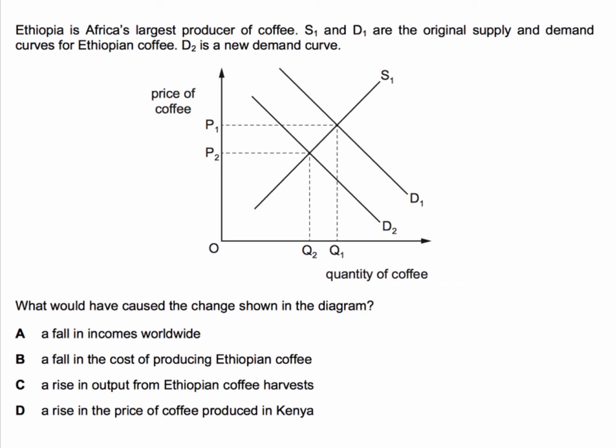Here's question one. Ethiopia is Africa's biggest producer of coffee, and we're told that S1 and D1 are the original supply and demand curves for Ethiopian coffee. D2 is the new demand curve, and the question is: what would have caused the change shown in the diagram? Have a go — I'll be back in a few seconds to give you the right answer.